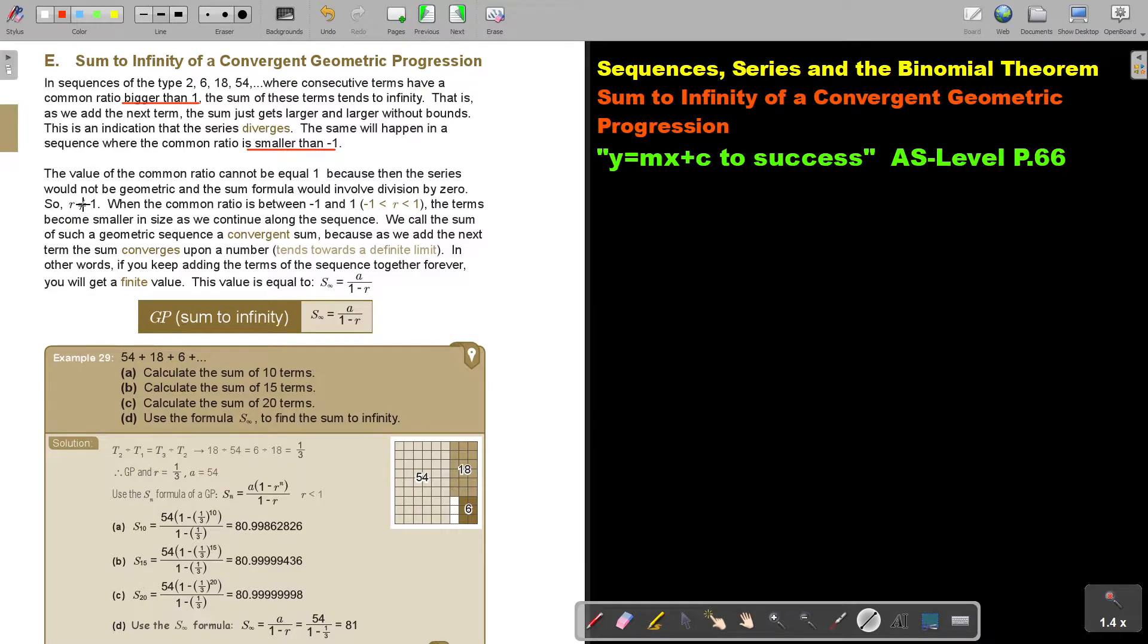R cannot be 1. When the common ratio is between negative 1, not equal, but between those values, the terms become smaller in size as we continue along the sequence. We call the sum of such a geometric sequence a convergent sum because as we add the next term, the sum converges upon a number. Tends towards a definite limit.